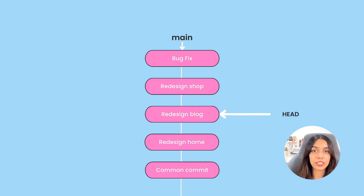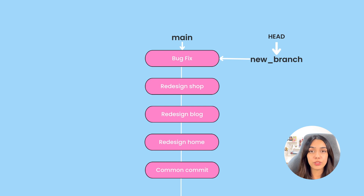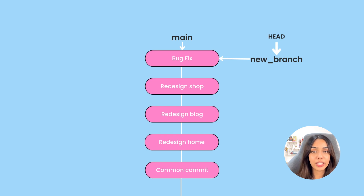The HEAD pointer points to the current working state of your repository. When you use commands such as git checkout, this HEAD pointer is moved to some other commit back in history, and that commit becomes your current working state. Similarly, when you create a new branch, a new pointer is created that points to the current commit you're on. All branches have a name — your main branch is called main or master, and when you create a new branch you'll need to give it a name.